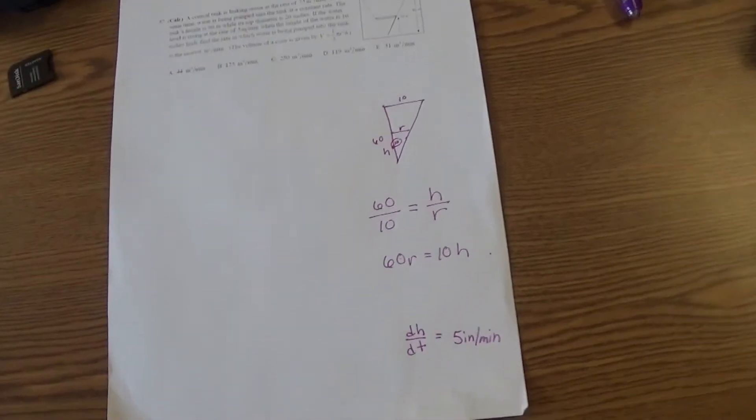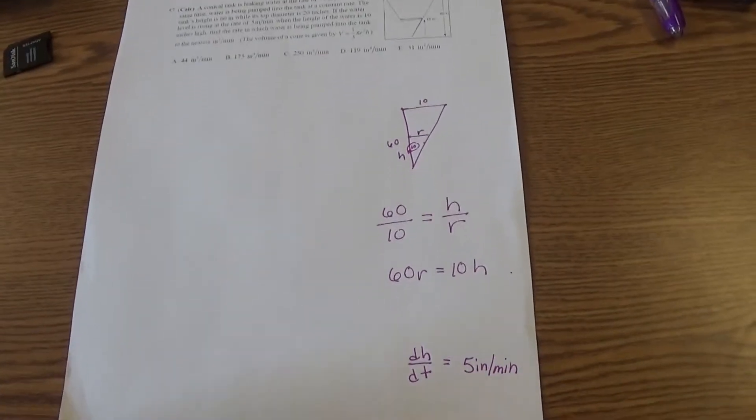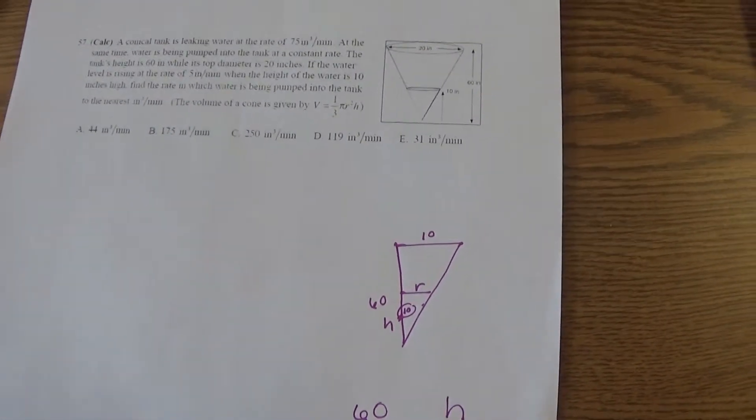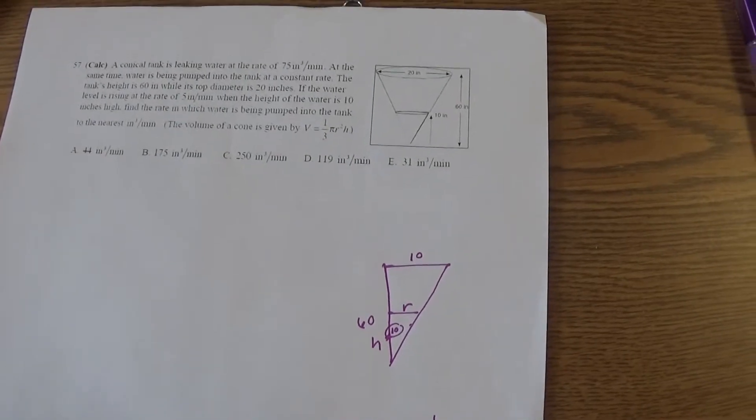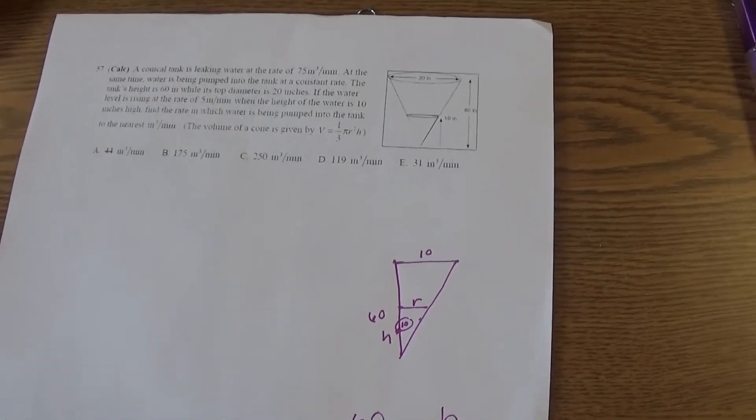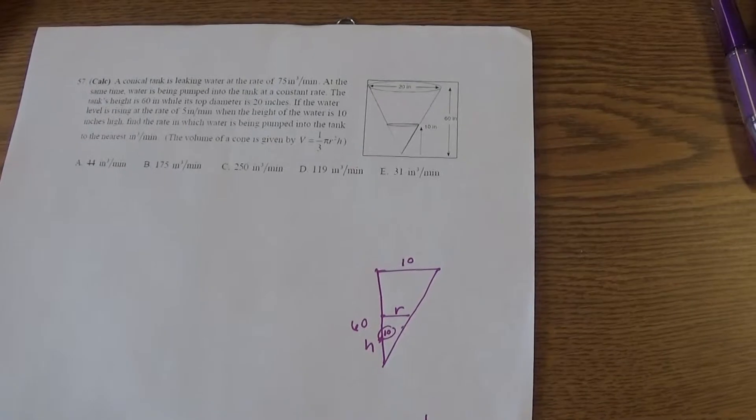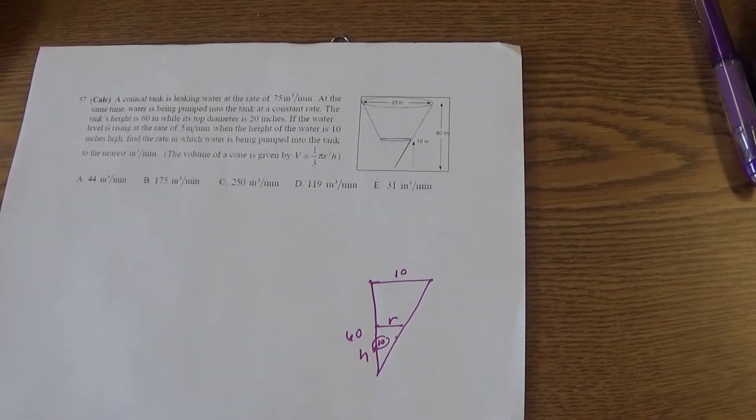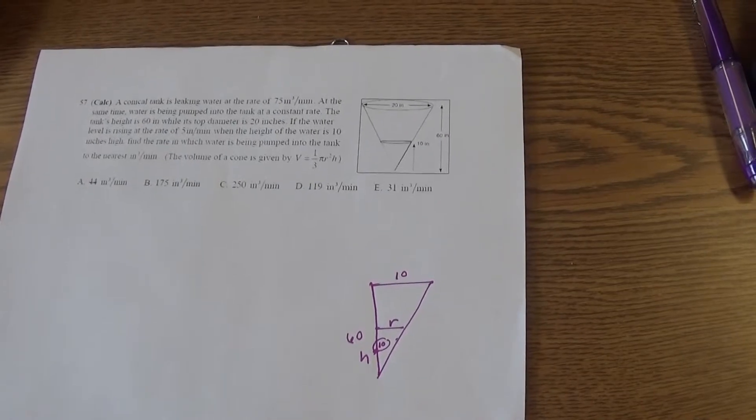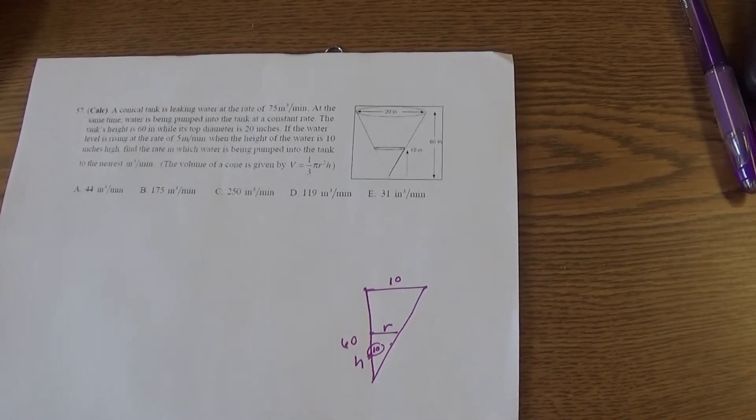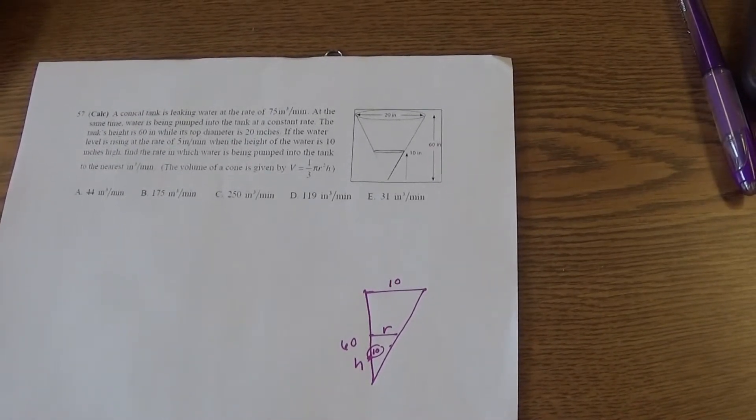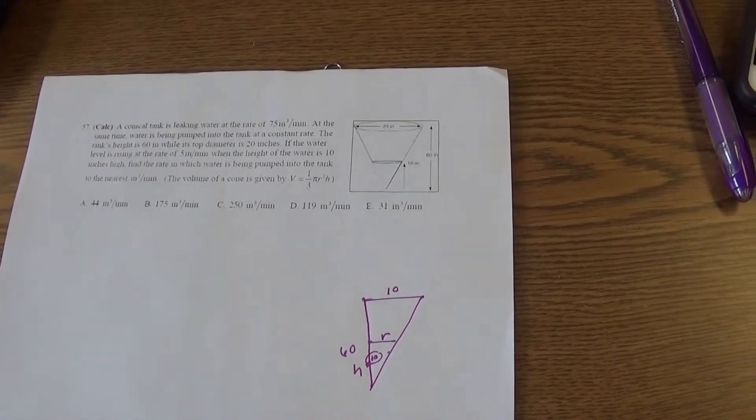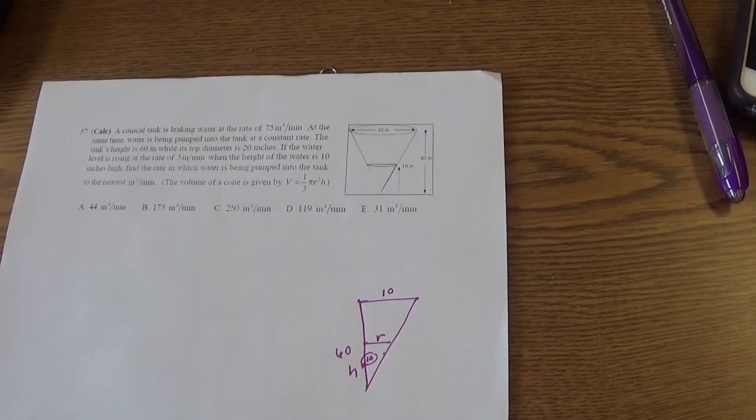Okay, I'm going to try number 57 again. Number 57 in the spiral book says a conical tank is leaking water at a rate of 75 cubic inches per minute. At the same time, water is being pumped into the tank at a constant rate. The tank's height is 60 inches while its top diameter is 20 inches. If the water level is rising at the rate of 5 inches per minute when the height of the water is 10 inches high, find the rate at which water is being pumped into the tank to the nearest cubic inch per minute.